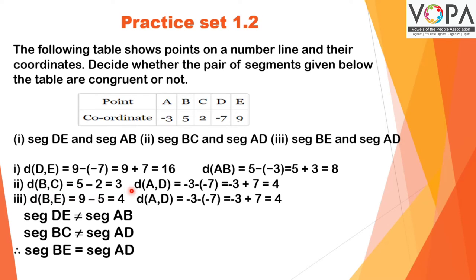(ii) Distance of BC = 5 - 2 = 3. Distance of AD = -3 - (-7) = -3 + 7. Here also you can see -7 is smaller than -3, hence -3 - (-7), so -3 + 7 = 4. BC is not equal to AD.